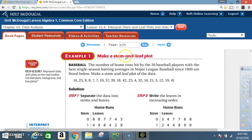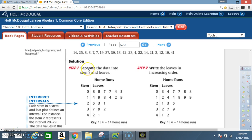Example 1: Make a stem and leaf plot. Baseball. The number of home runs hit by the 20 baseball players with the best single season batting averages in Major League Baseball since 1900 are listed below. Make a stem and leaf plot of the data. So here we have the data set. This is 20 numbers. Solution. Step 1: Separate the data into stems and leaves.